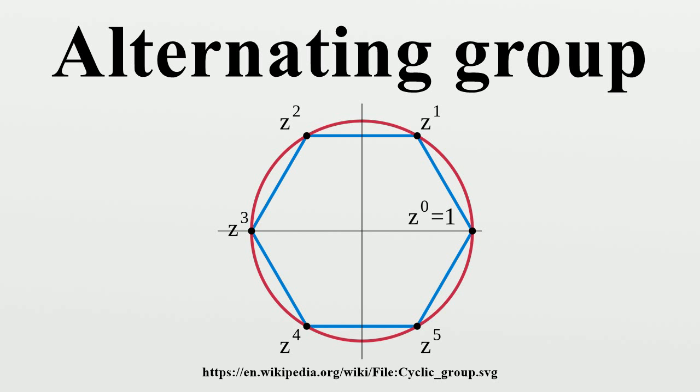It is the kernel of the signature group homomorphism sgn: Sn → {1, -1}, explained under symmetric group.